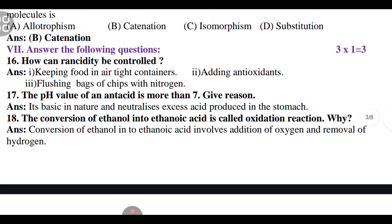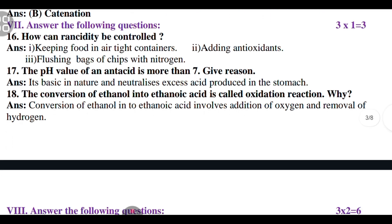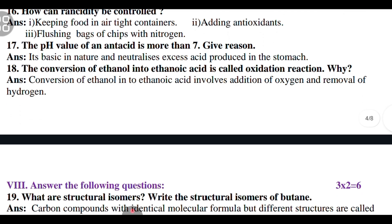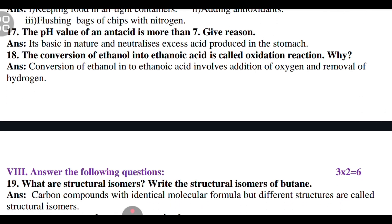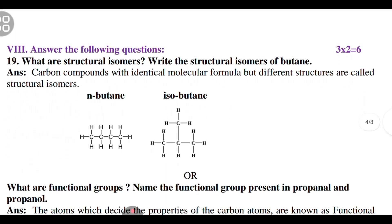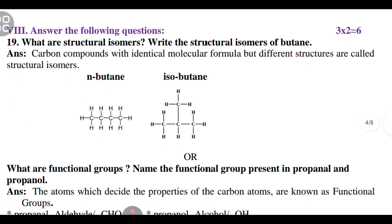Seventh main, answer the following question. How can the acidity be controlled? These are the answers for them. 17th is the pH value of the acid is more than 7, give the reason. The 18th question is the conversion of ethanol into ethanoic acid is called oxidation reaction. Why? This is the answer for that.